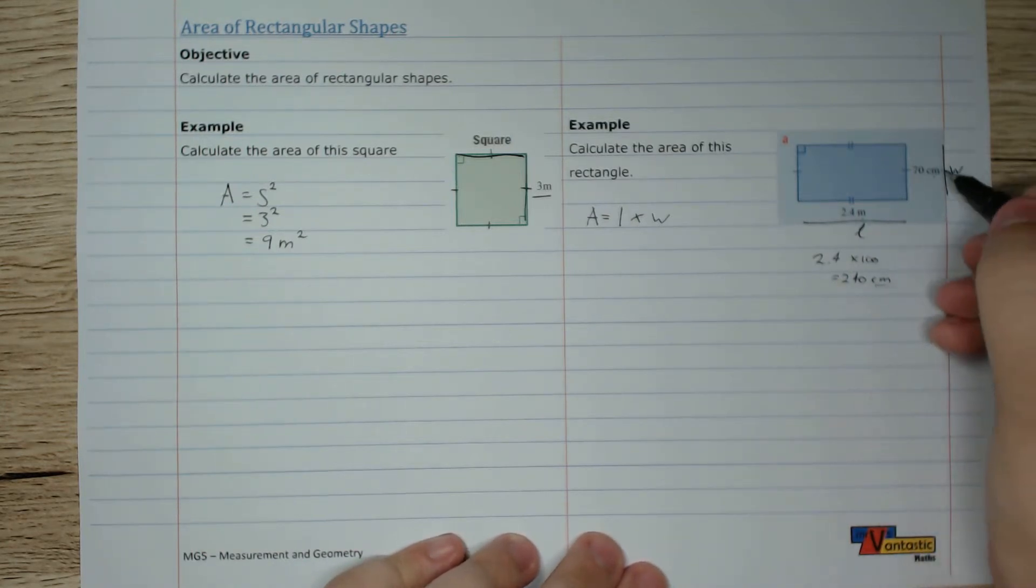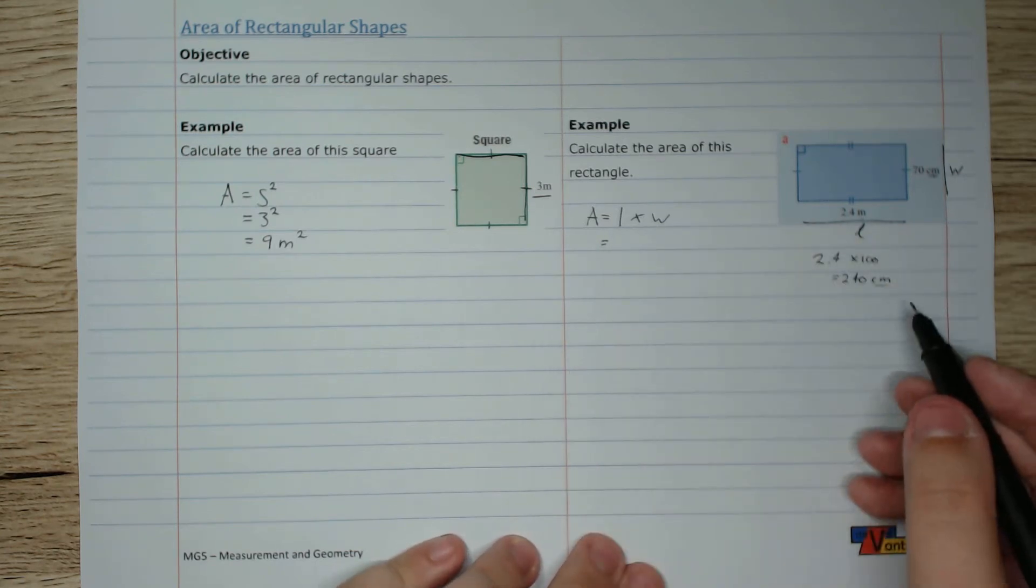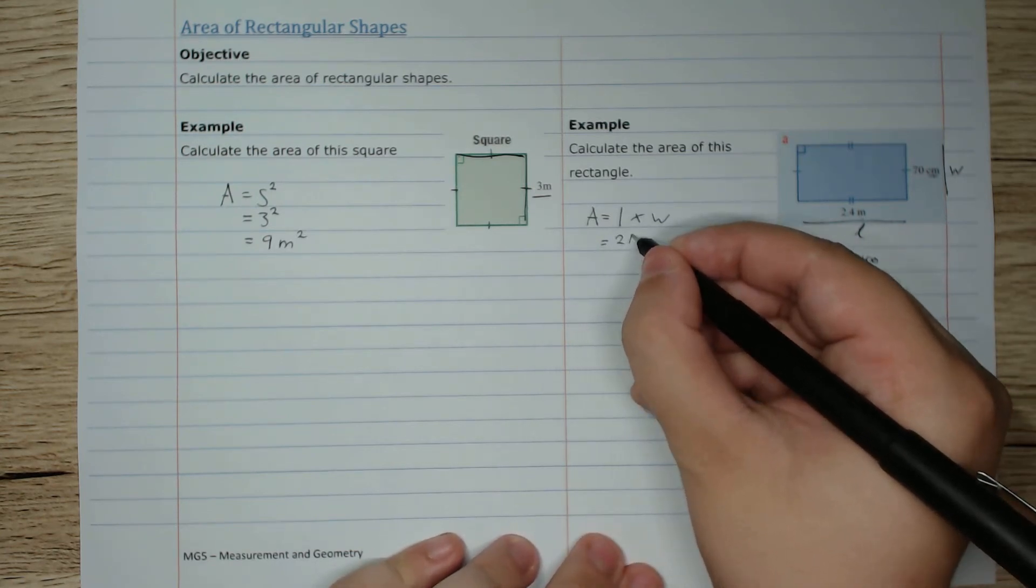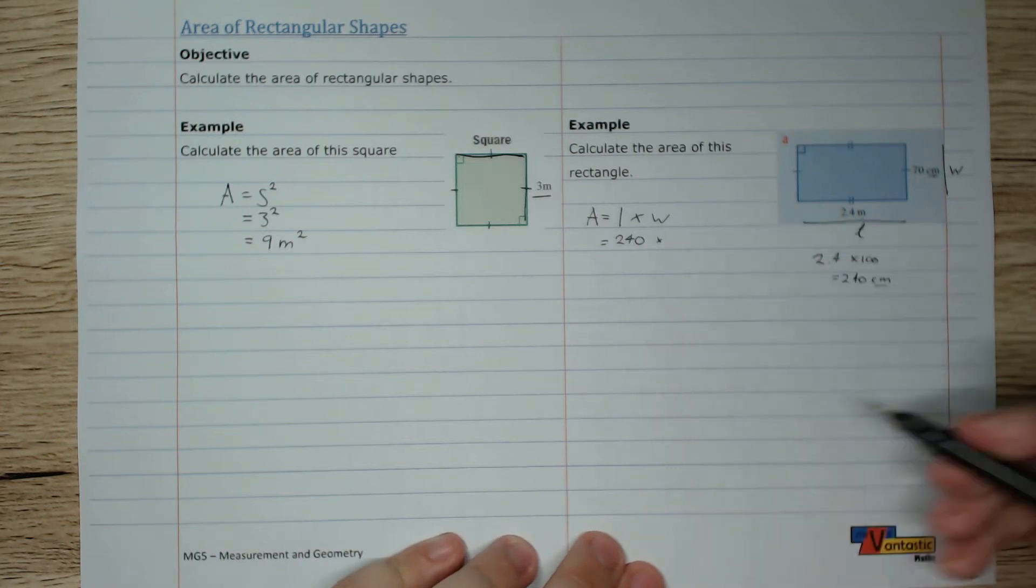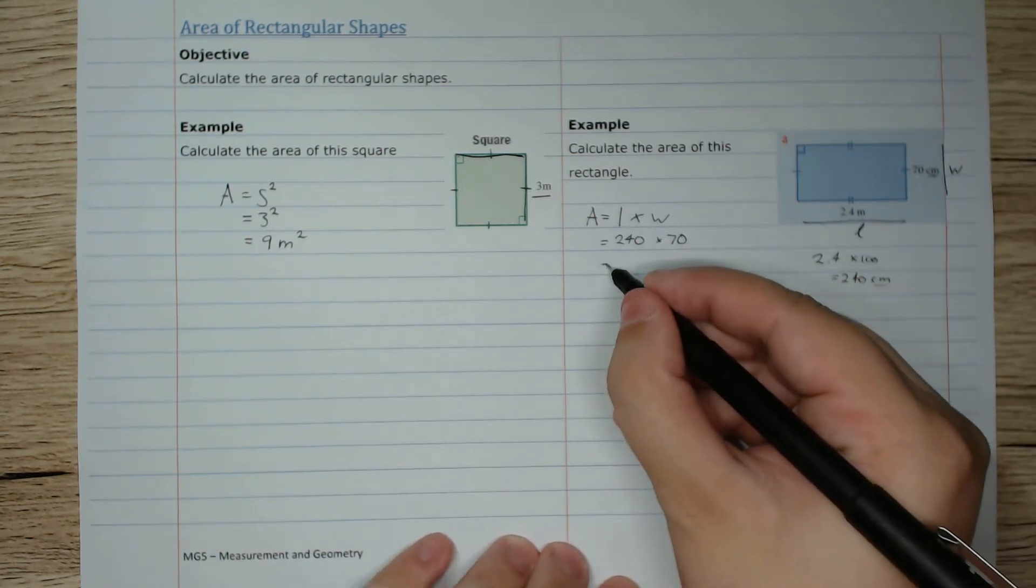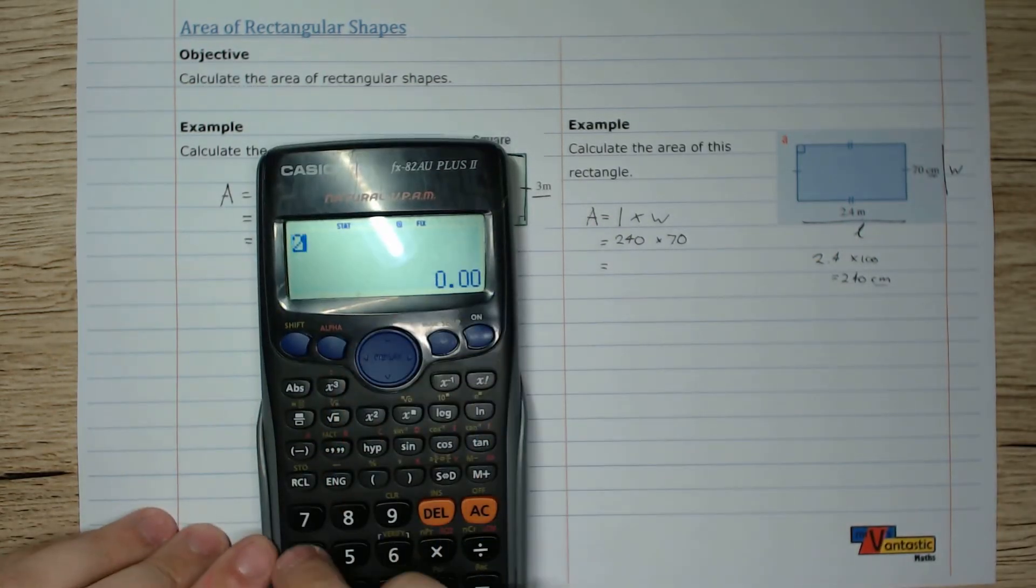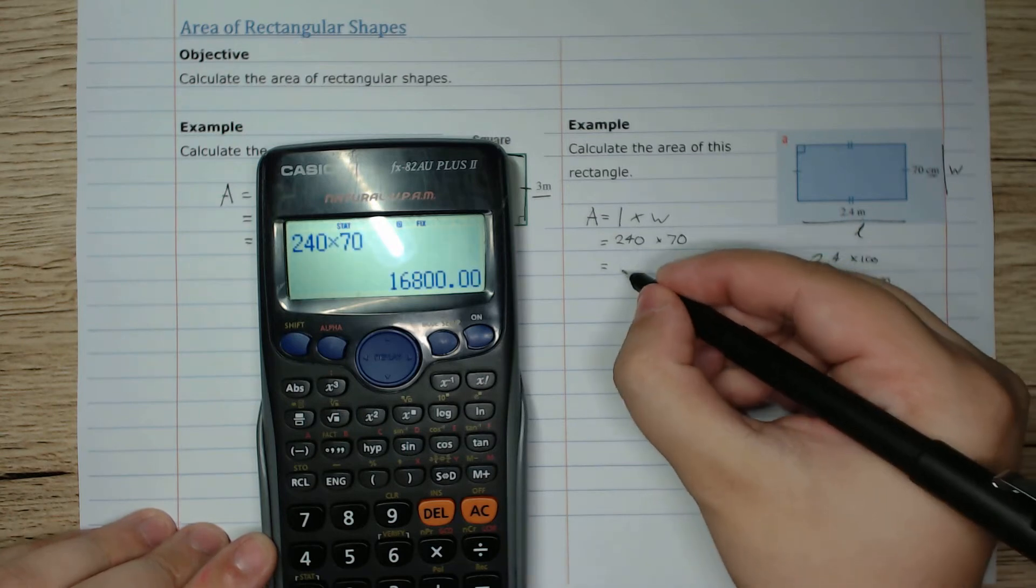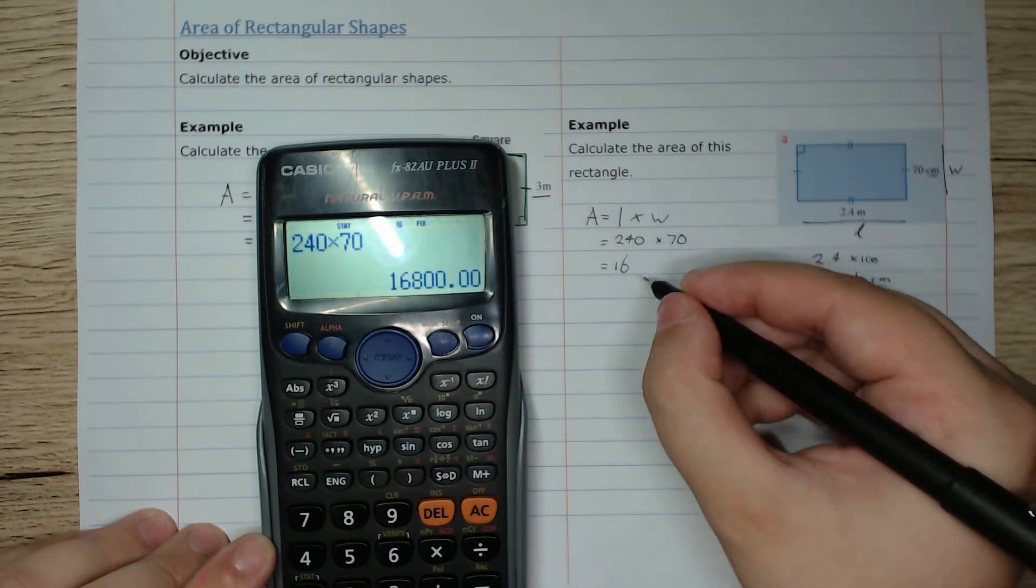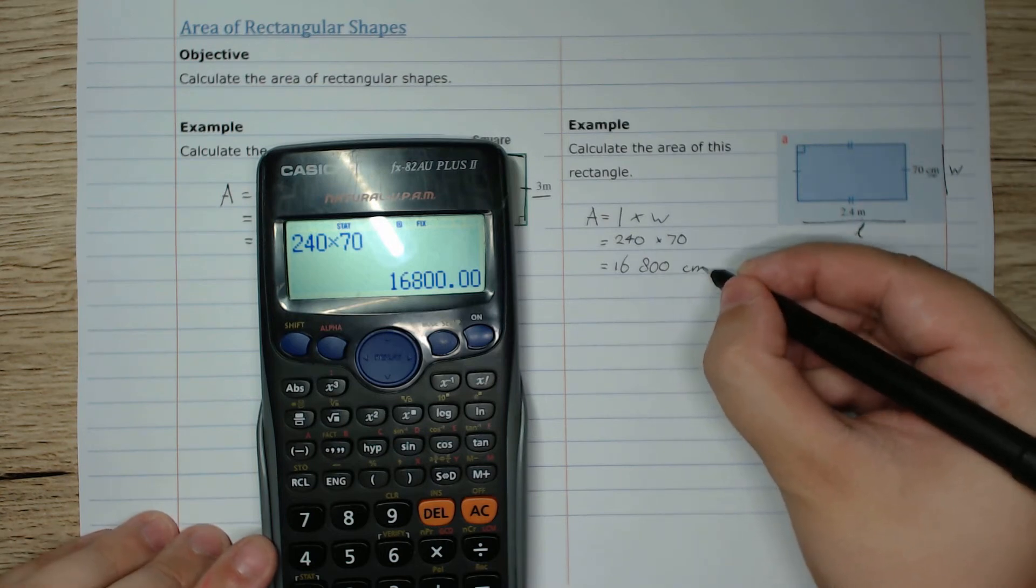And now that our units match, we can multiply them. So our length, 240, times our width, 70, equals... I'll get my calculator... 240 times 70 equals 16,800 square centimeters.